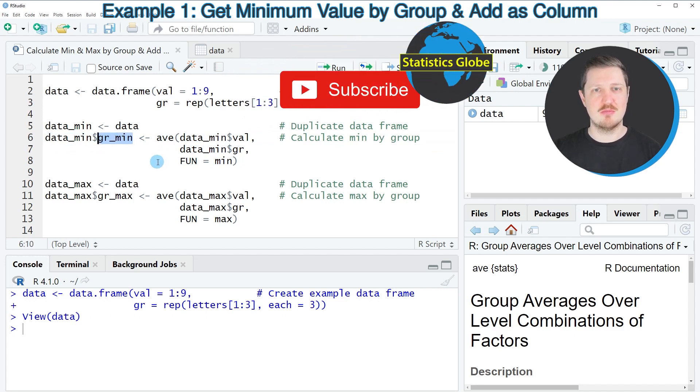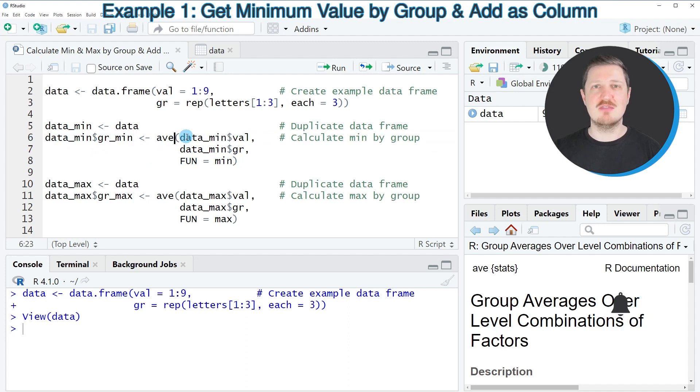And I'm calling this new column grmin and within the AVE function I'm specifying the values column of our data frame, the group column of our data frame and I'm specifying the function argument to be equal to min.